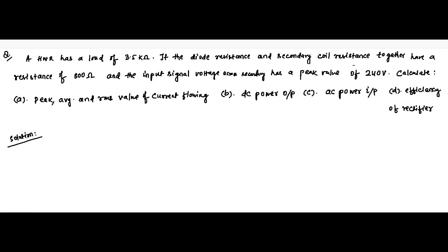Here is another question on half wave rectifier. It has been given that a half wave rectifier has a load of 3.5 kilo ohm — that is the load resistance across which the diode is connected. The diode resistance and secondary coil resistance together have a combined total value of 800 ohm.